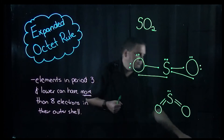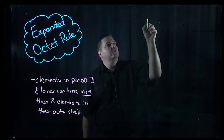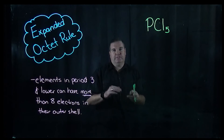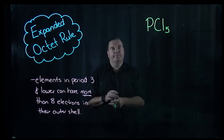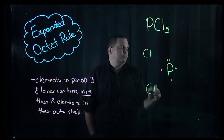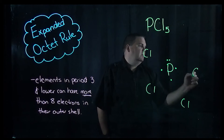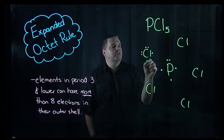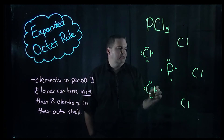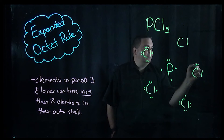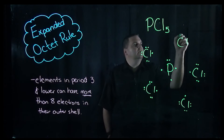I'll show you one more example. The next one involves phosphorus — the two atoms we normally look at for expanded octets in chemistry are phosphorus and sulfur. Phosphorus goes in the middle; it has five electrons around it because it's in group five. This time we've got five chlorines around it, evenly spaced as much as we can. These chlorines all have seven electrons around them, and every chlorine will want to get eight electrons in its outer shell.